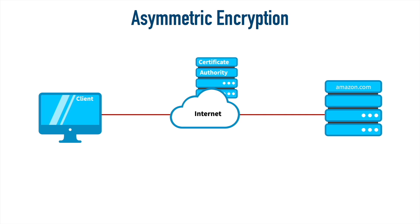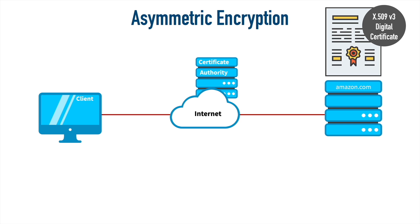Amazon has a digital certificate — typically an X.509 version 3 digital certificate — obtained from a trusted third party, let's say VeriSign. When Amazon is given this digital certificate, they receive two keys: a public key and a private key. If I encrypt something with the public key, it can only be decrypted with the private key. And if something is encrypted with the private key, it can only be decrypted with the public key. The public key is made freely available, but the private key is kept private and not given to anyone.